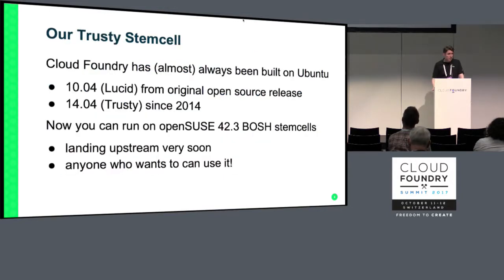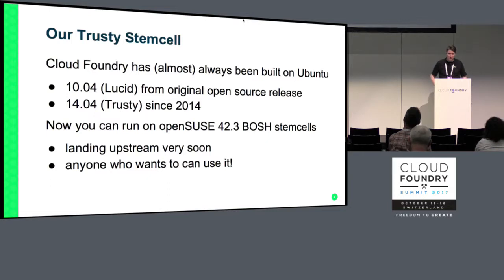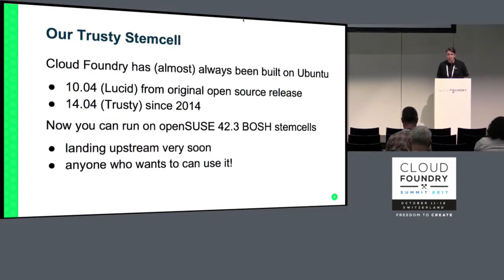In a Cloud Foundry implementation, you run all the Cloud Foundry roles on stem cells — on Bosch stem cells. For as long as I can remember, Cloud Foundry has always run on Ubuntu, initially on Lucid and then on Trusty starting around 2014. But now, starting very soon, you'll be able to use OpenSUSE 42.3 Bosch stem cells to run Cloud Foundry.